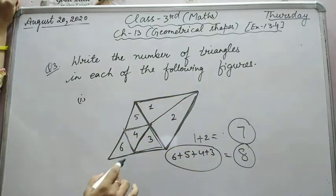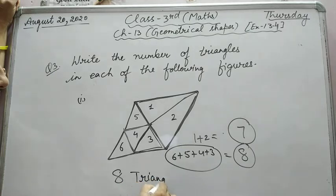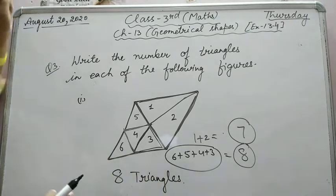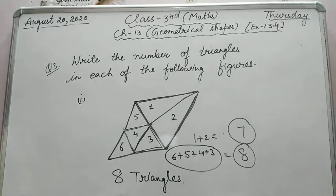In this figure, the complete count gives you eight triangles. Clear. In all three parts, you have to find out triangles. Count the triangles like this.